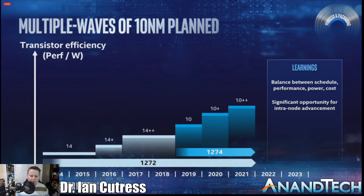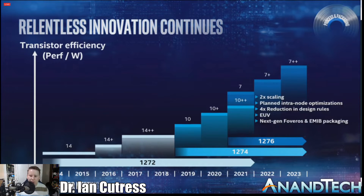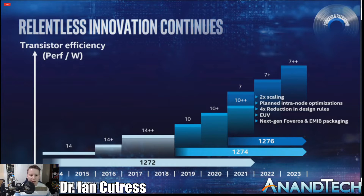This was presented by Intel recently at their investor day. The idea now is that when they have these major process nodes — 14, 10, 7 — they're going to be building in these BKM updates into their product strategy. So 14nm had a plus and a plus plus. 10nm will now have a plus and a plus plus. 7nm, which is planned for 2021, is going to have a plus and a plus plus.